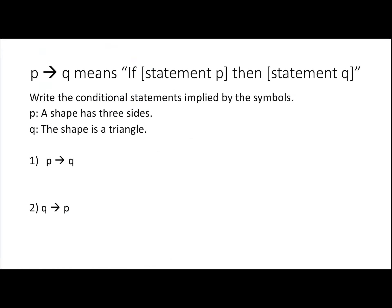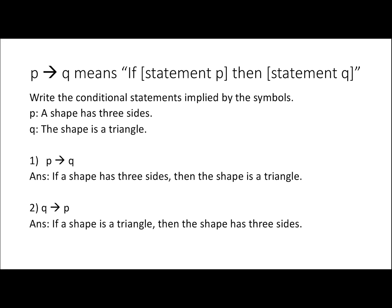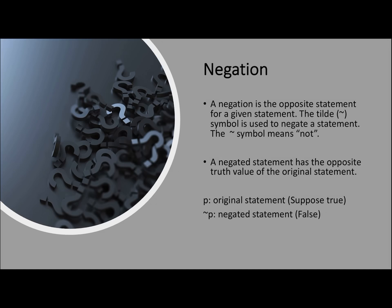Remember, P arrow Q means 'if statement P then statement Q.' This is a Try Before You Click slide — pause the video, write your answer, and restart to check. For number one you should have gotten: 'If a shape has three sides, then the shape is a triangle.' For number two: 'If a shape is a triangle, then the shape has three sides.'